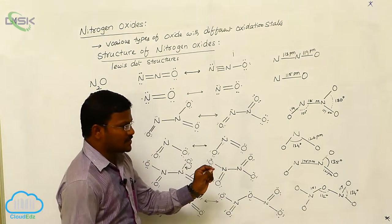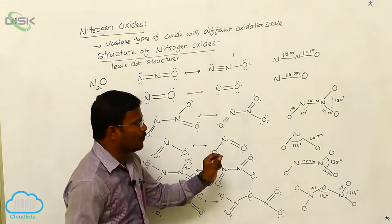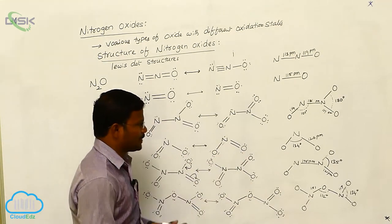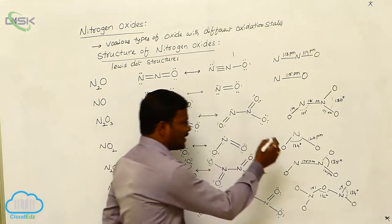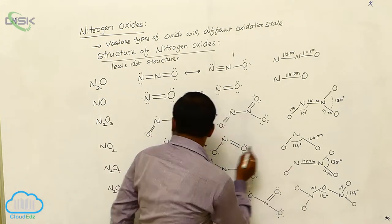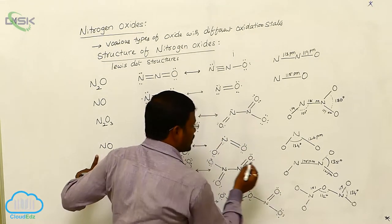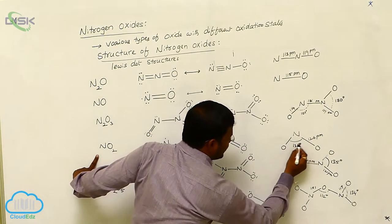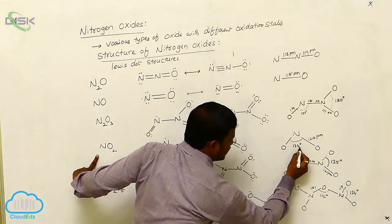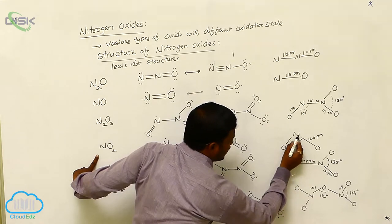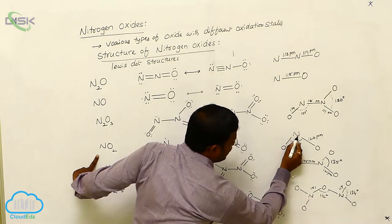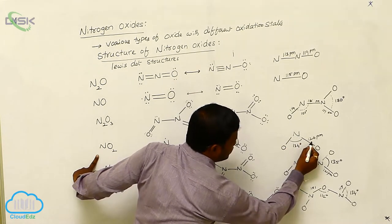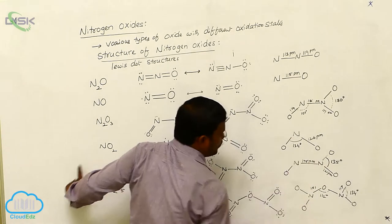Some bond angles and bond lengths present in the respective areas. In nitrogen dioxide, the bond angle between these two is 134 degrees, whereas the bond length between nitrogen and oxygen is 120 picometers.